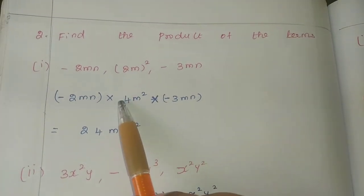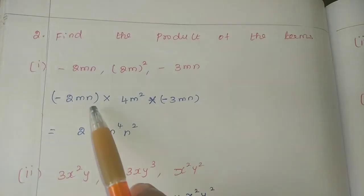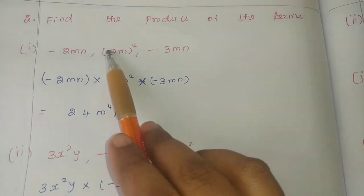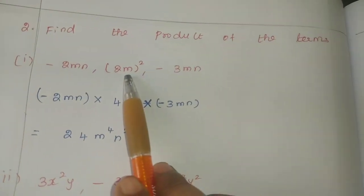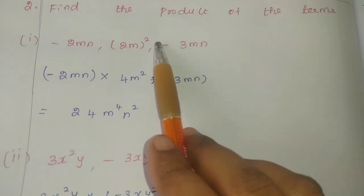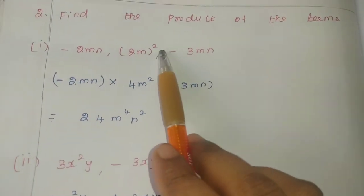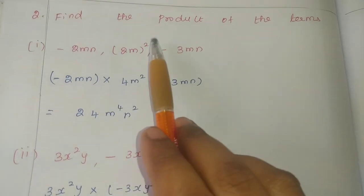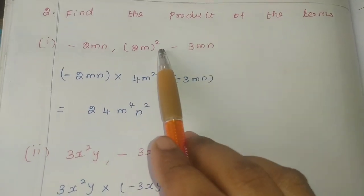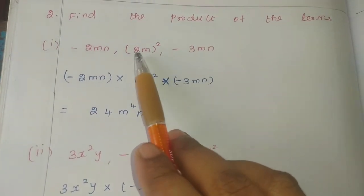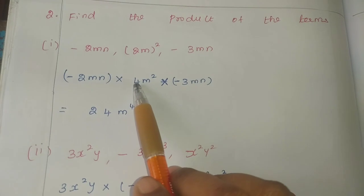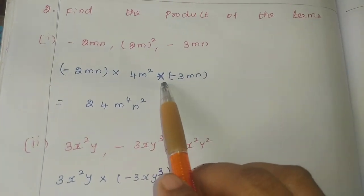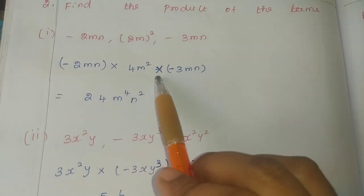First, we are going to write the product: minus 2mn, and this is bracket whole square. Whole square means we square both — so 2 squared is 4, and m into m is m square. Then, into minus 3mn.